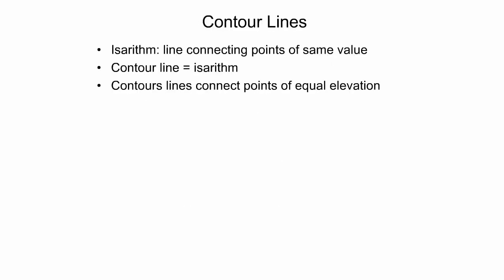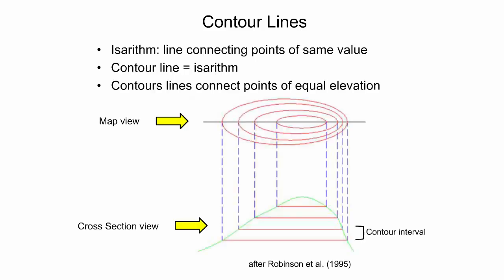An isorythm is a line drawn on a map connecting points that have the same numerical value of some variable. Contour lines are isorythms because they connect all points of equal elevation. The diagram shows both the map view and cross section view of a narrow hill. The red lines in the map view are the contours, created from the intersection of red parallel equally spaced horizontal planes with the green 3D hill surface, then projected orthogonally to the map surface.